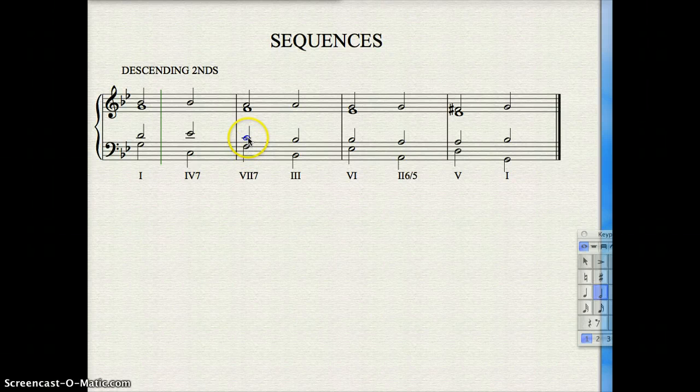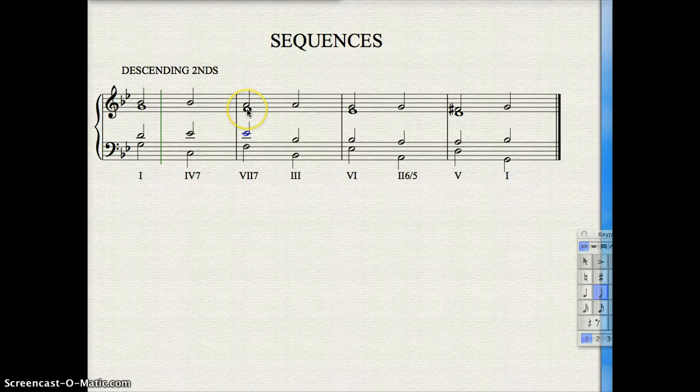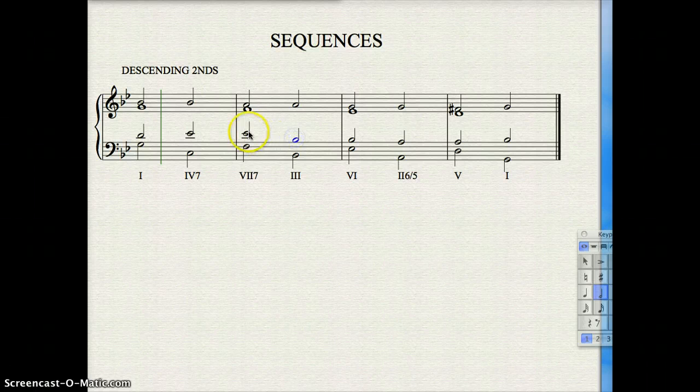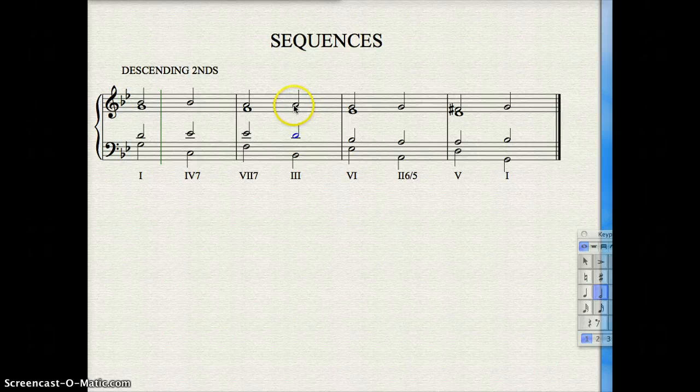So the 7-7 that follows it cannot be complete. So the 7th is prepared as the 3rd of the 4, ties over as the 7th of the 7th. I have a 3rd and a doubled root. No 5th. 7th here resolves down to the 3rd of this chord. We have a 5th and a 7th in the soprano. 7th resolves down.